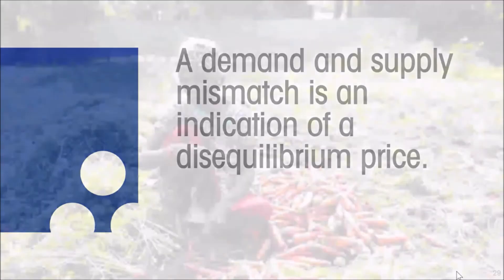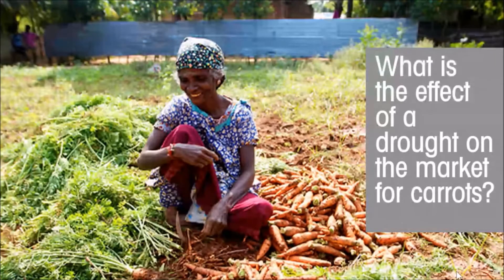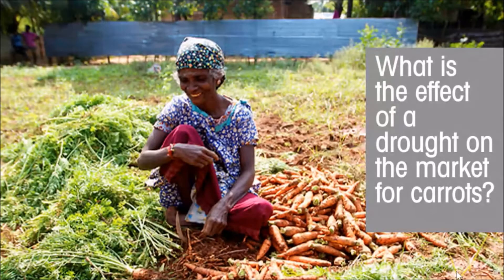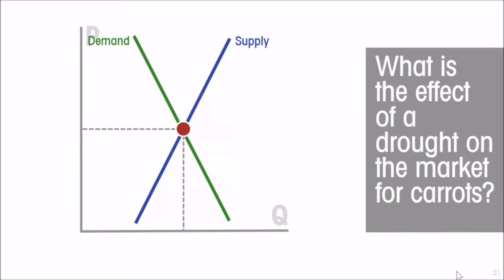Let us apply our market model in a different way. What is the effect of a drought on the market for carrots? Most people can probably answer this intuitively from experience, but it is still a good idea to use the model to derive the result and get practice working with it. There is a three-step procedure.